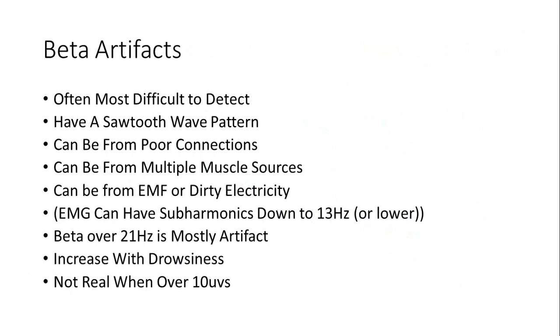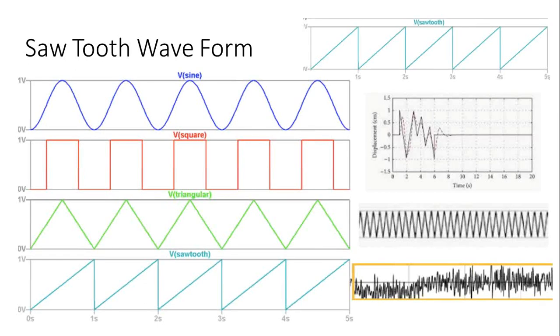Here's beta artifacts. These are often the most difficult to detect. They have a sawtooth waveform. That's what makes them so readily identifiable. They can be from poor connections, multiple muscle sources, electromagnetic forces around you or dirty electricity, muscle tension with subharmonics. Beta over 21 hertz is mostly artifact. People increase their beta when they get drowsy. If beta is over 10 microvolts, there's a good chance you're looking at artifact.